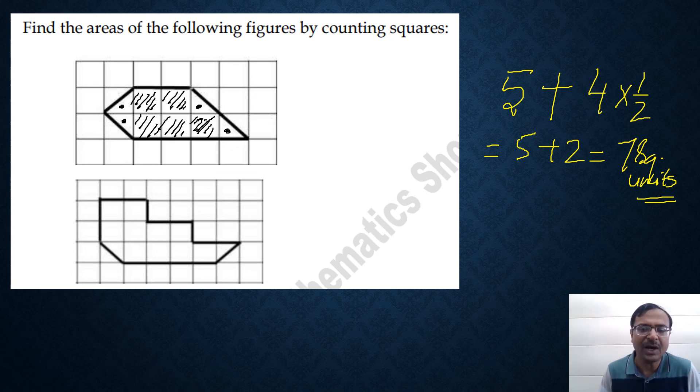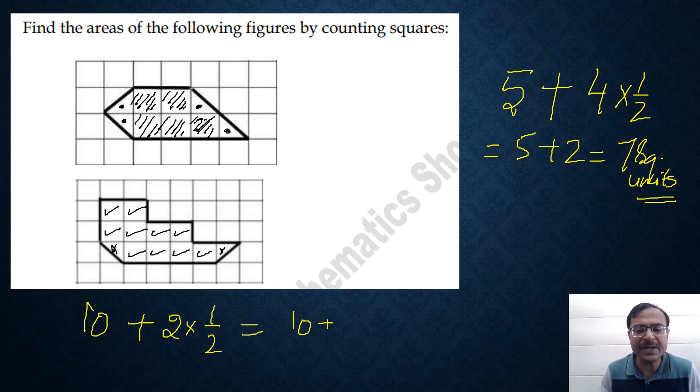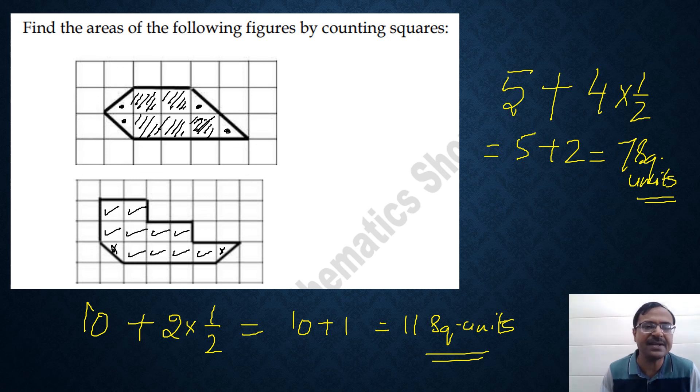In the second figure, if you see how many total complete squares are there. So I'll put a tick mark, 1, 2, 3, 4, 5, 6 and then 7, 8, 9, 10. So there are 10 complete squares. So that will be 10 plus and let's see how many are half. So I'll put a cross here 1 and then 2. Only 2 inside the given figure there are half squares and therefore we have to write 2 times half and therefore this will be 10 plus 1 which is 11 square units that is the area of this figure. Now this is the basic understanding of what area is and how many square units are there in a particular figure when the figure is drawn on a square grid.